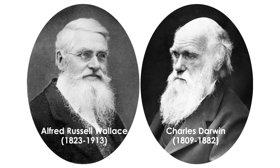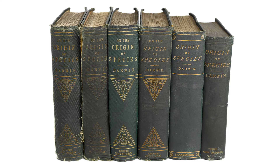Although mutations, gene flow, and genetic drift play key roles in microevolution, the main driver of evolutionary change is natural selection. The theory of evolution by means of natural selection was independently conceived by two English naturalists, Charles Darwin and Alfred Russell Wallace, who first presented their theory in 1858. Darwin gets most of the credit because his 1859 book, On the Origin of Species, provided the bulk of the evidence.